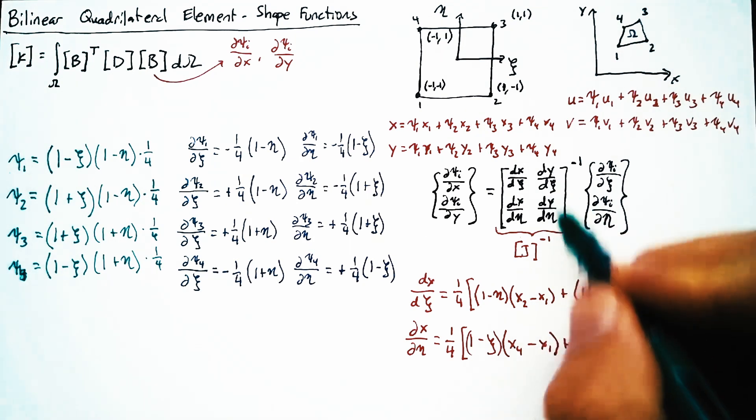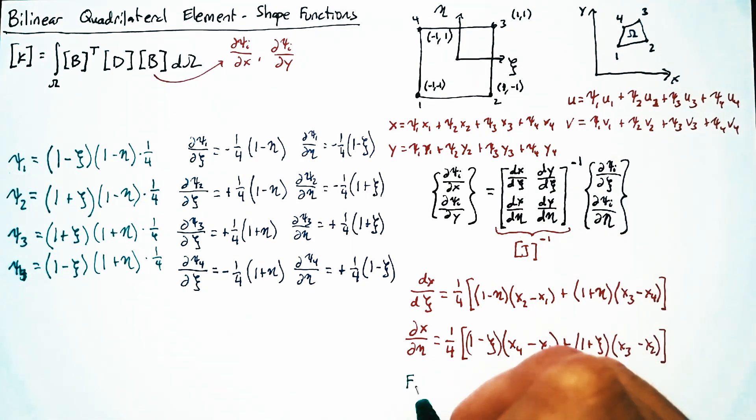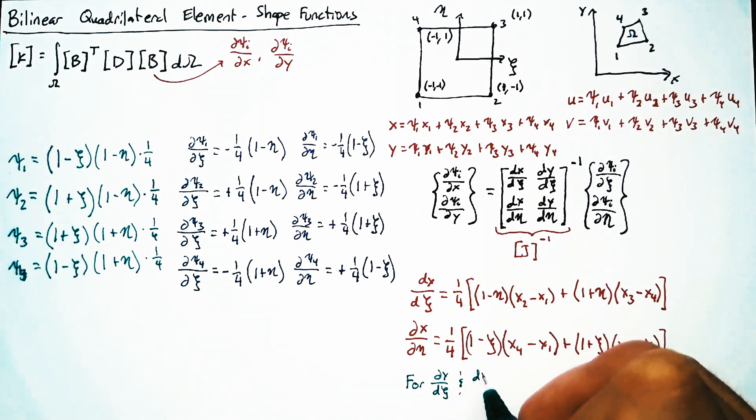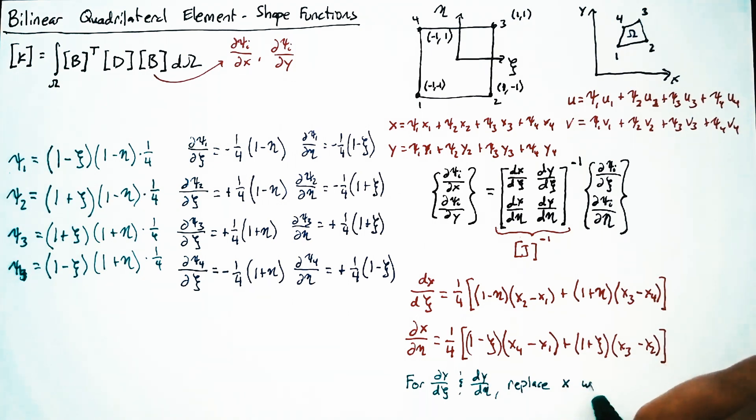And for the y values, the dy dx and dy d eta, all we have to do is replace all of our x's with y's above. So it's this exact same pattern. We just have y's where we have x's. All right. Now, everything is technically defined here. However, we have a slight problem.